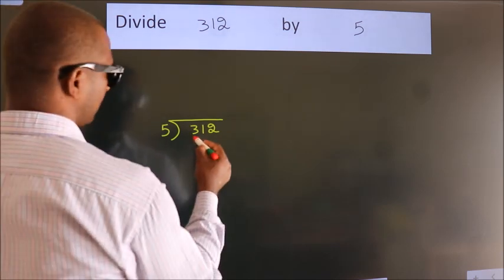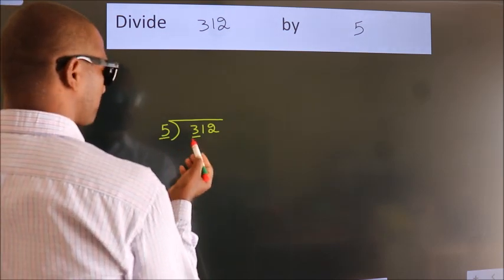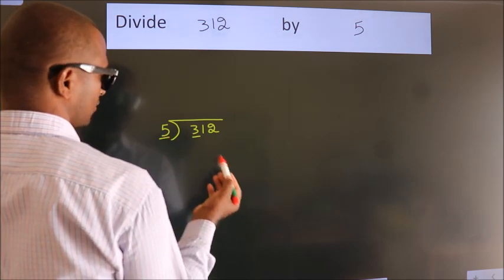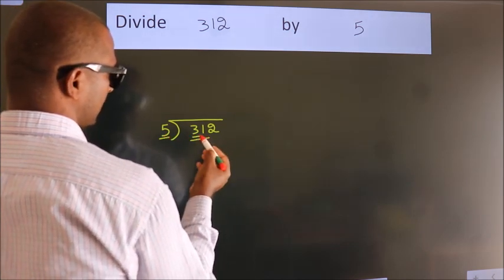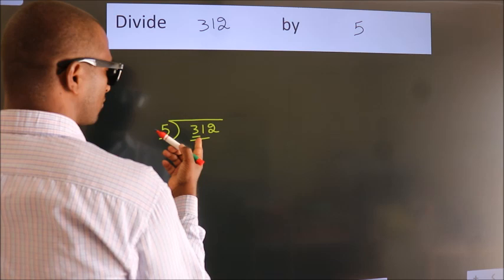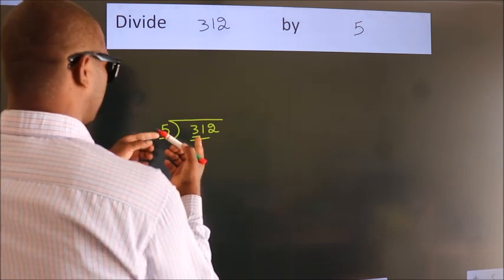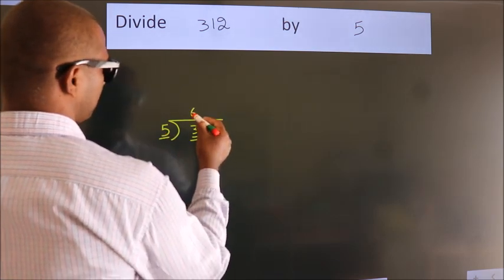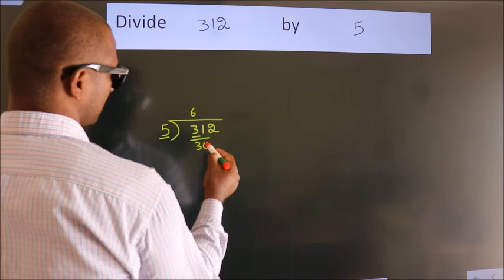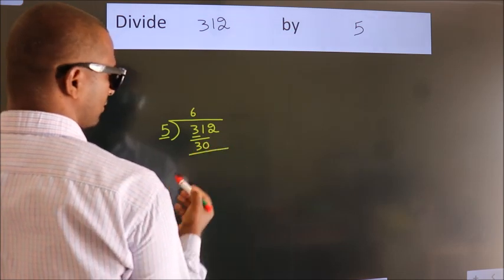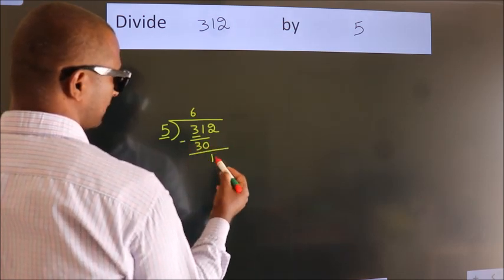Next, here we have 3. Here 5. 3 smaller than 5. So we should take 2 numbers, 31. A number close to 31 in 5 table is 5×6=30. Now, we should subtract. We get 1.